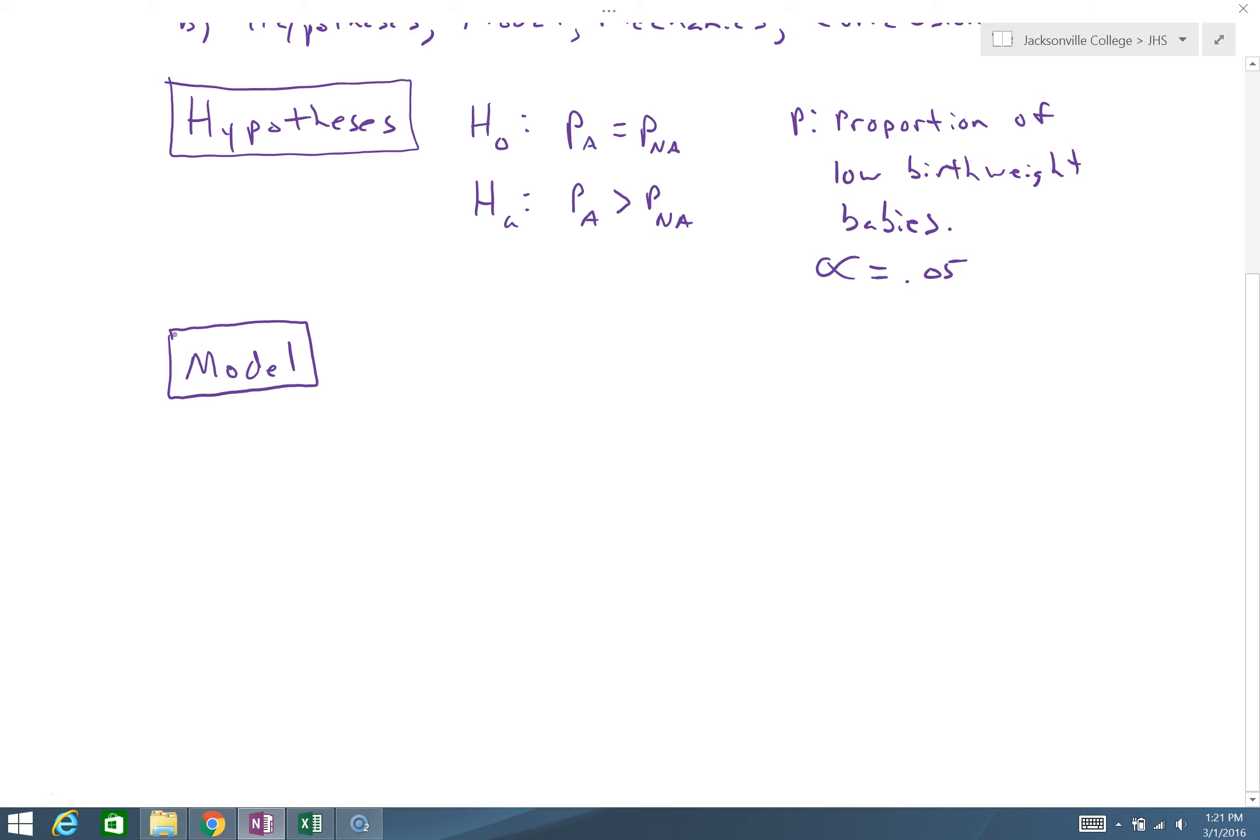Model. In our model section, we're going to state what test we're conducting and then check the conditions. So our test is a two proportion Z test. Our generic conditions are random, normal, and independent. I'm going to put independent second because the normal condition is going to take a little checking here.